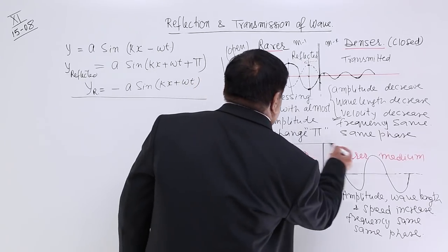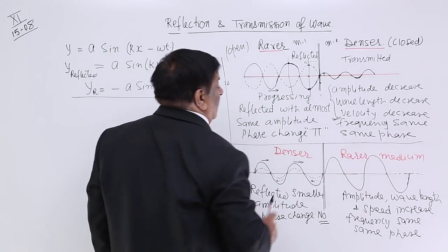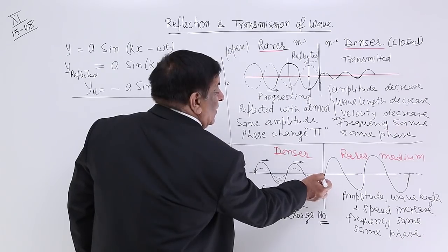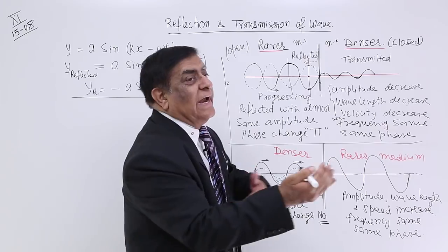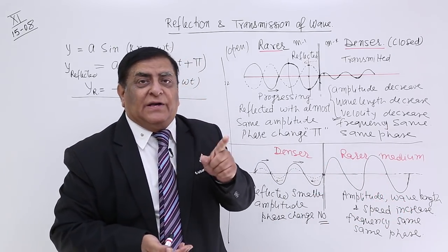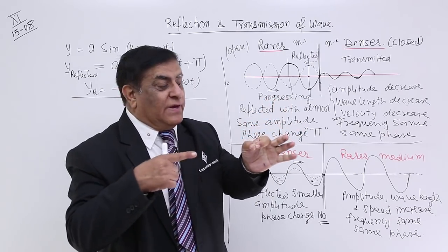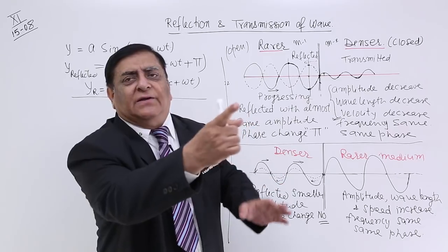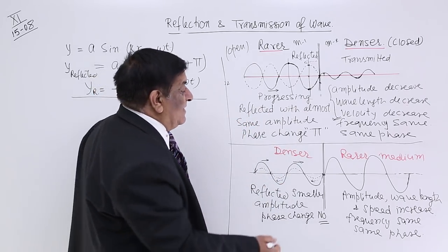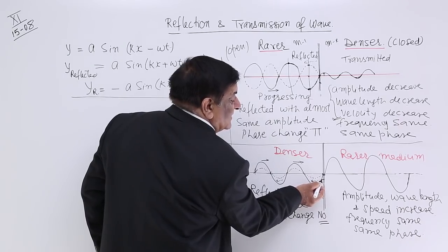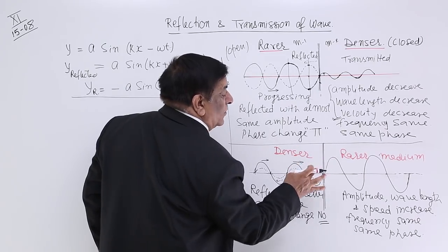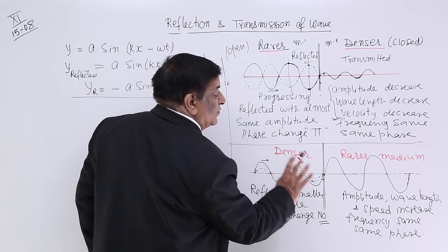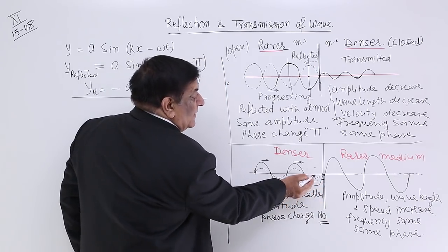What happens when a wave moves from denser to rarer medium? In this case, the rarer medium particles are so lightweight that they cannot oppose and reflect it back. Just like in carom, if you hit a goat with your striker — does the striker come back? No. Both move forward, slightly deflected. The same happens here — it does not get thrown back strongly. So when it reflects, it reflects with no phase change but with less amplitude.